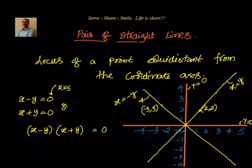Similarly, if I substitute (2,2), it will become 2 minus 2, 0 into something is 0. If I substitute (3, minus 3), then 3 minus 3 is 0. So what we see from here is this combined equation satisfies all the points on the locus.